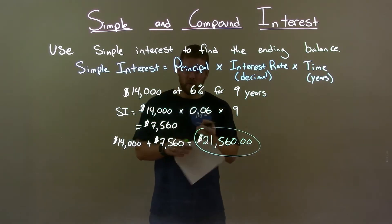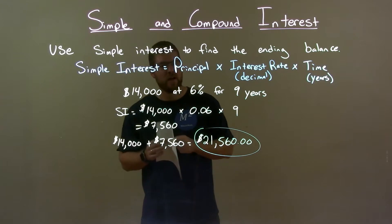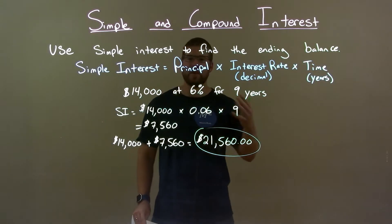Quick recap: we're given $14,000 at 6% for nine years and we have to find the ending balance using simple interest.